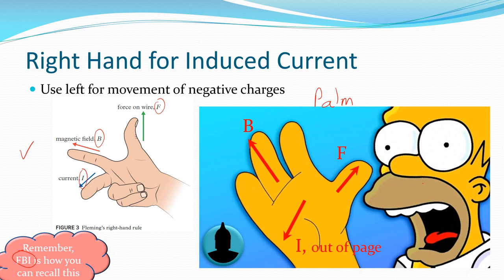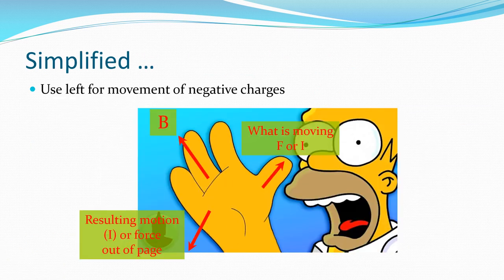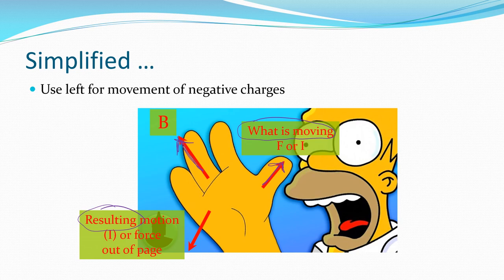For induced currents, there's essentially one hand rule for almost all examples in this chapter. If we think of the thumb as the thing that's actually moving — whatever is moving corresponds to your thumb — the magnetic field is always your fingers, and what results is the palm pushing in the direction of the resulting force or induced current.